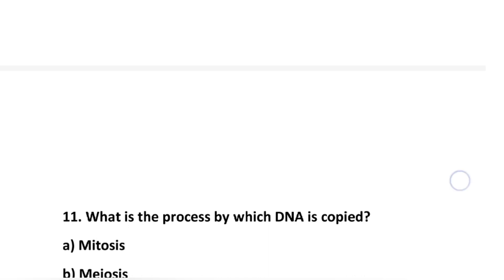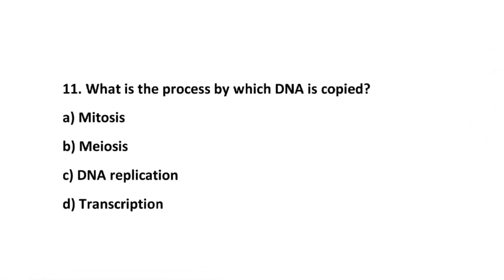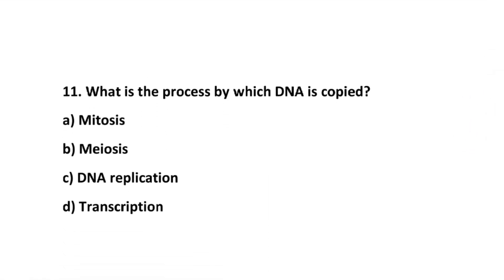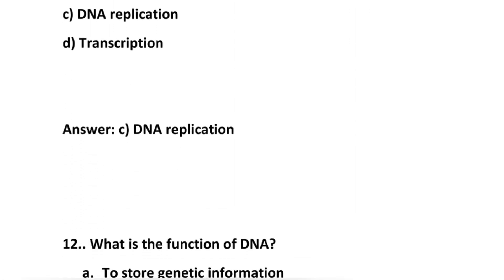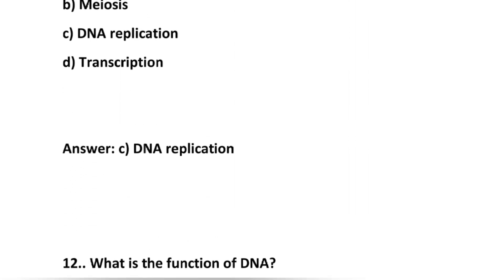Number 11: What is the process by which DNA is copied — how are DNA copies made? Option A: mitosis. Option B: meiosis. Option C: DNA replication. Option D: transcription. The correct answer is option C: DNA replication.